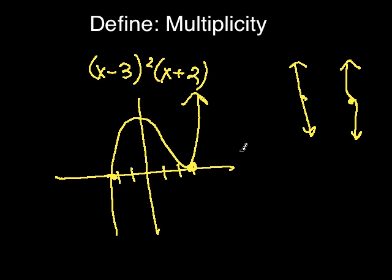So if we had x minus 3 cubed instead, the graph would look like this.